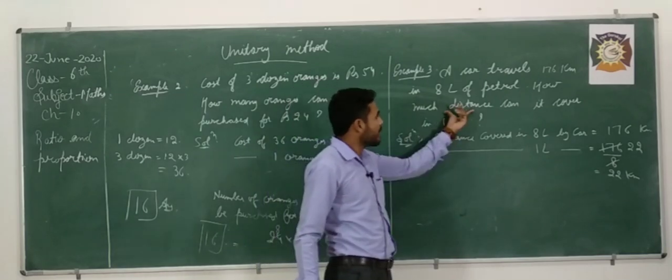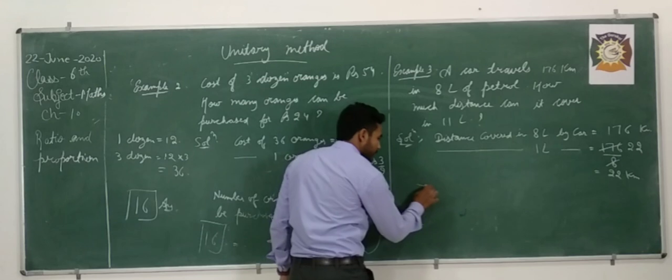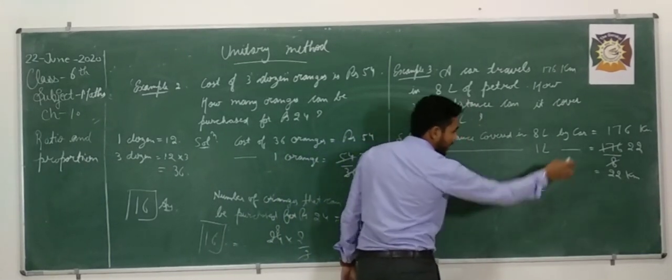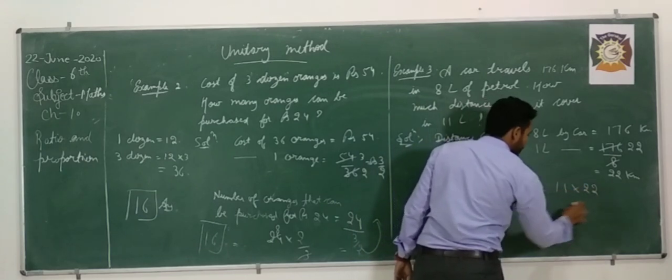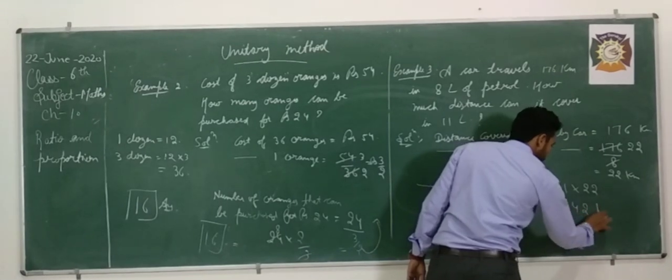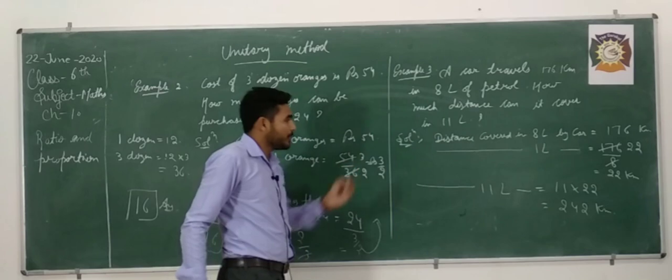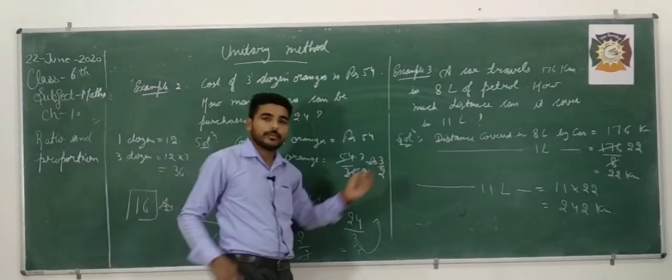After that, you have to find distance covered in 11 liters. So, distance covered in 11 liter by car, that is equal to 11 multiplied by 22. It means 242 km. I hope all of these examples, you must be clear.